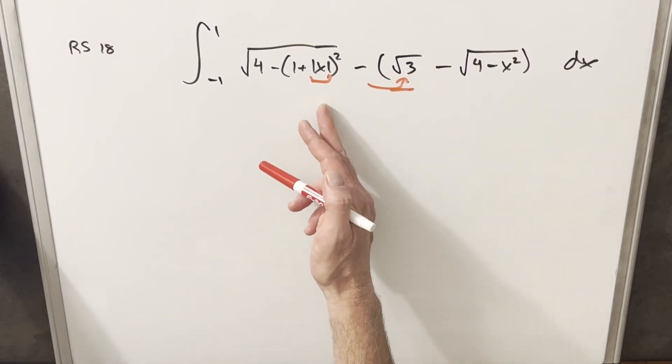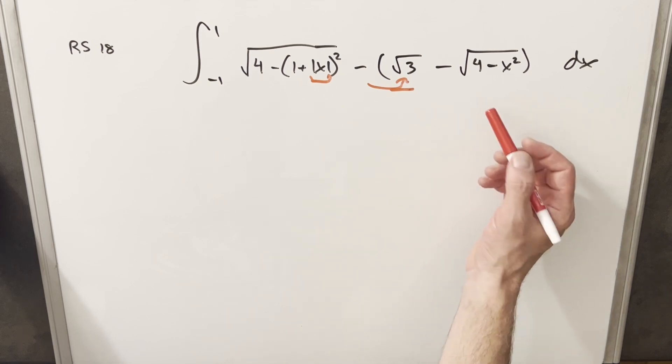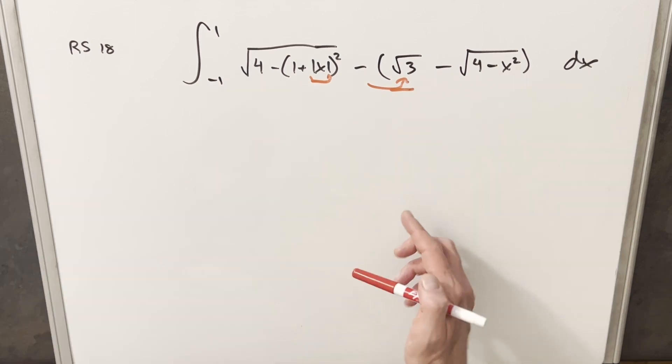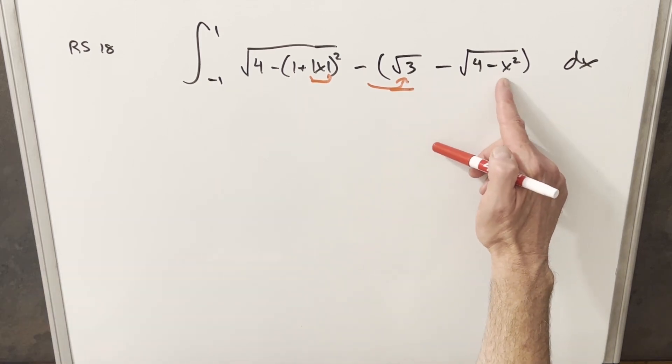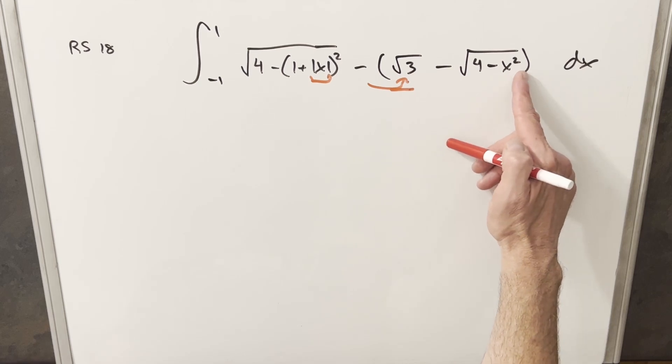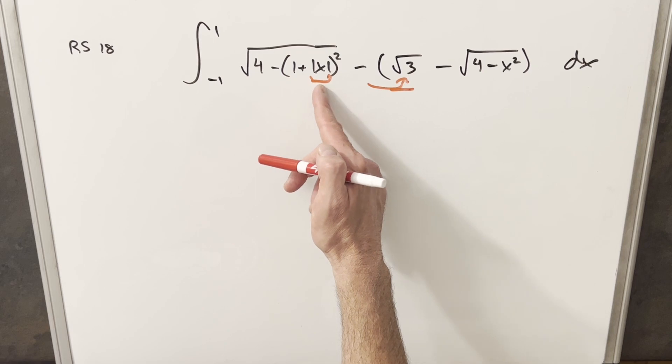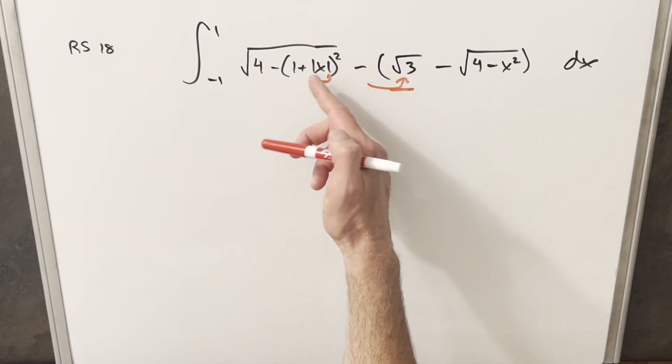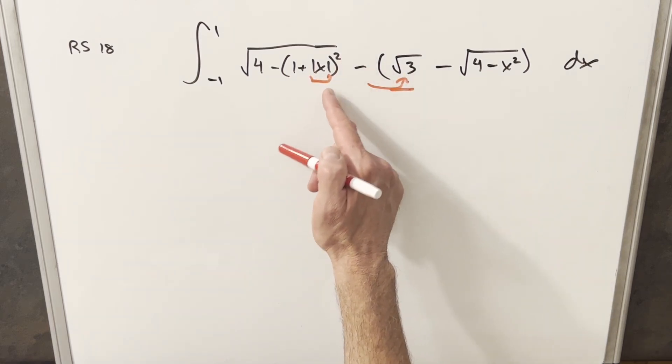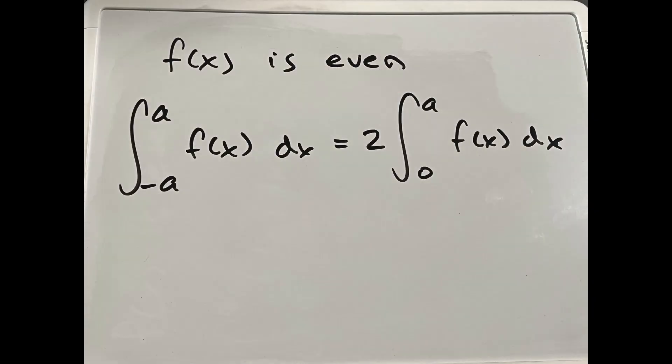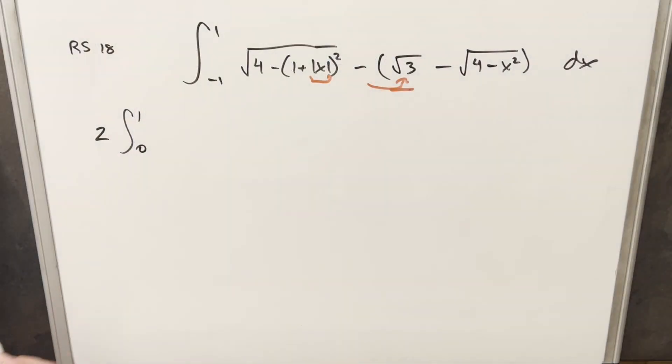The thing I want to notice to start is that this is actually an even function. You can notice that by if you plug a negative number in here for the X squared, that's just going to become positive because of the square. And then on the absolute value, if you plug like a negative one in here, it's going to become one because of the absolute value. And that's going to allow me to use this nice property for even functions where with the symmetric bounds from negative one to one, I can write this as an integral from zero to one and just bring a two out front.